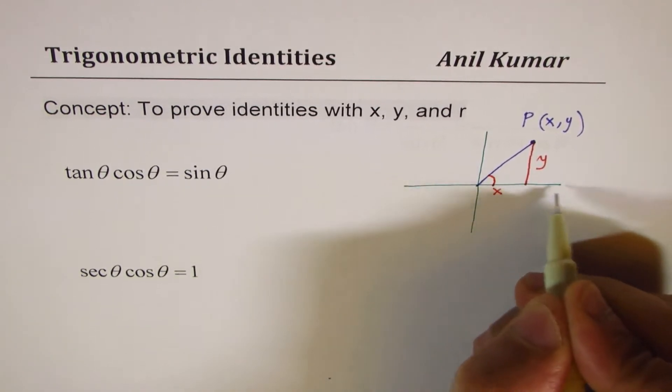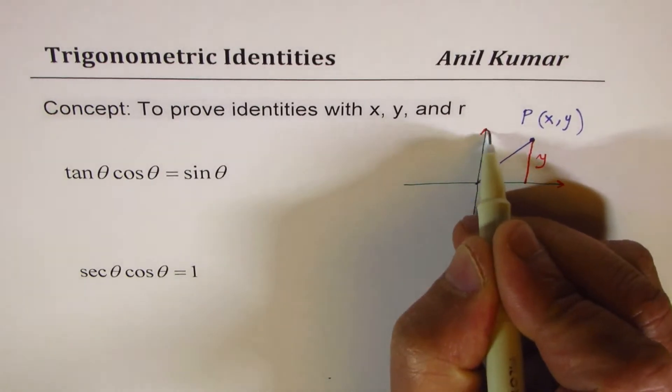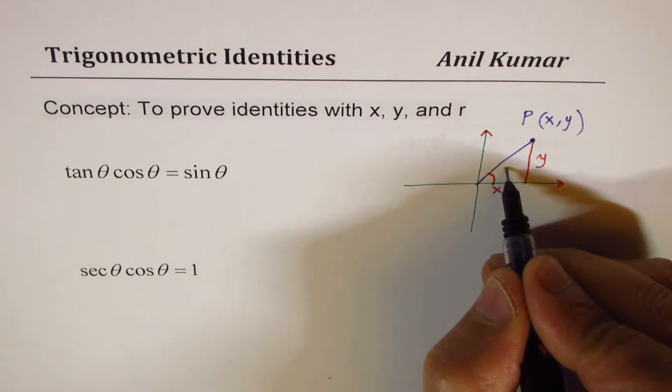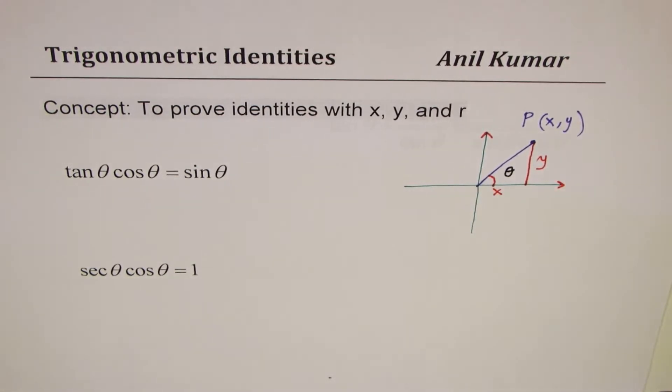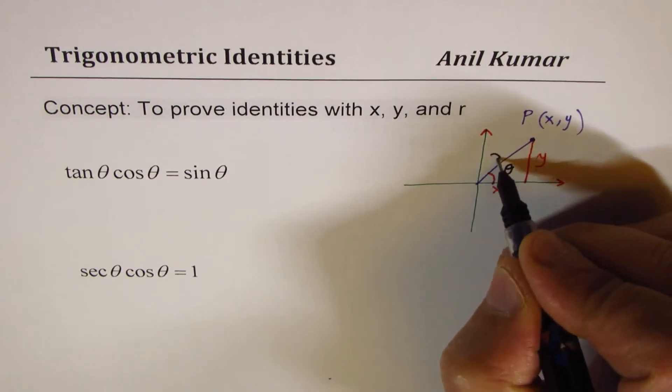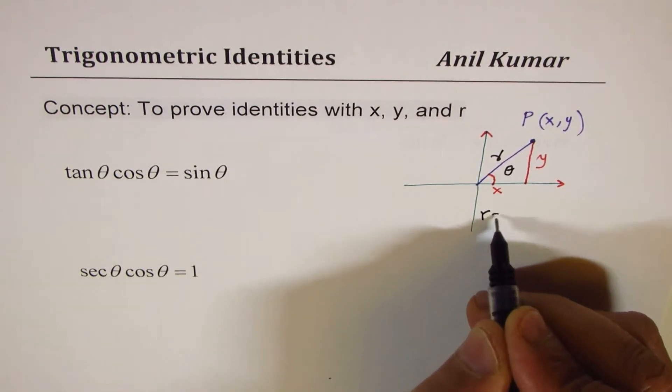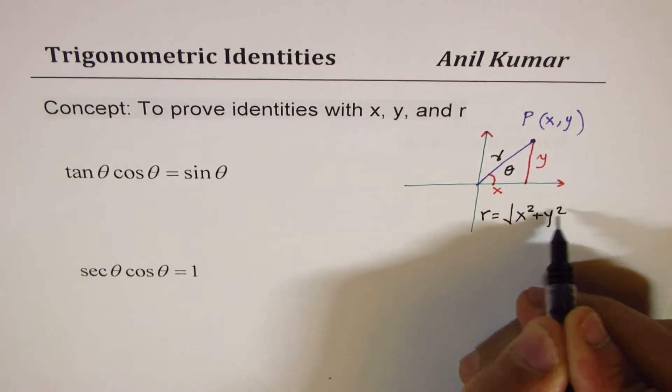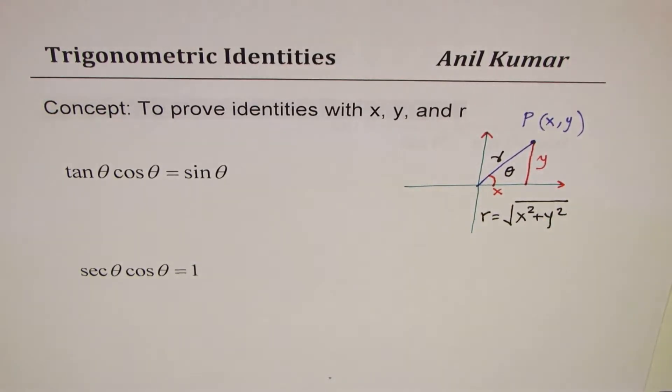And the angle which it makes with positive x-axis, let it be, let us say, theta. Now, in that case, hypotenuse is r and the value of r will be equal to square root of x squared plus y squared, Pythagorean theorem. So that is the situation we have.